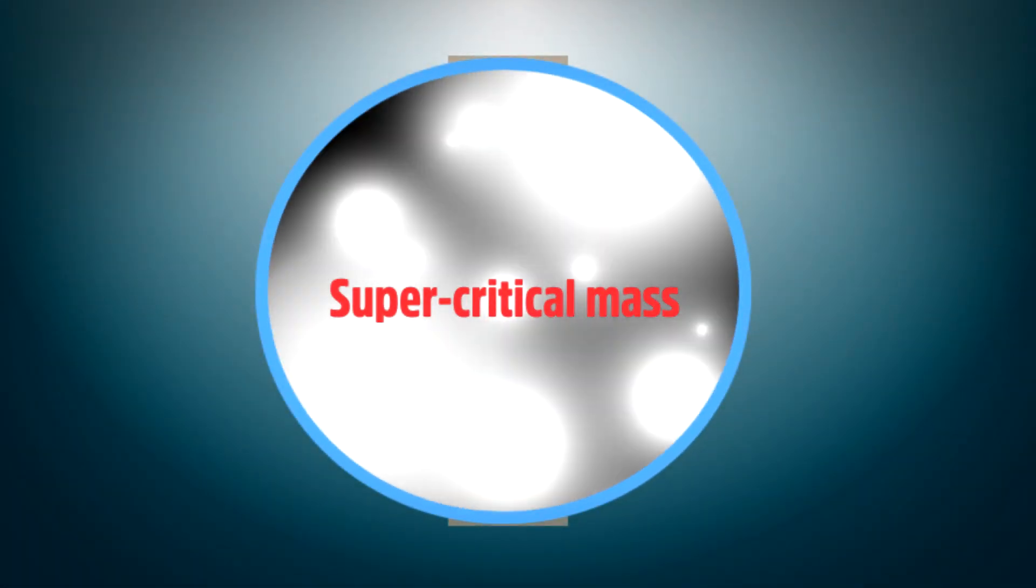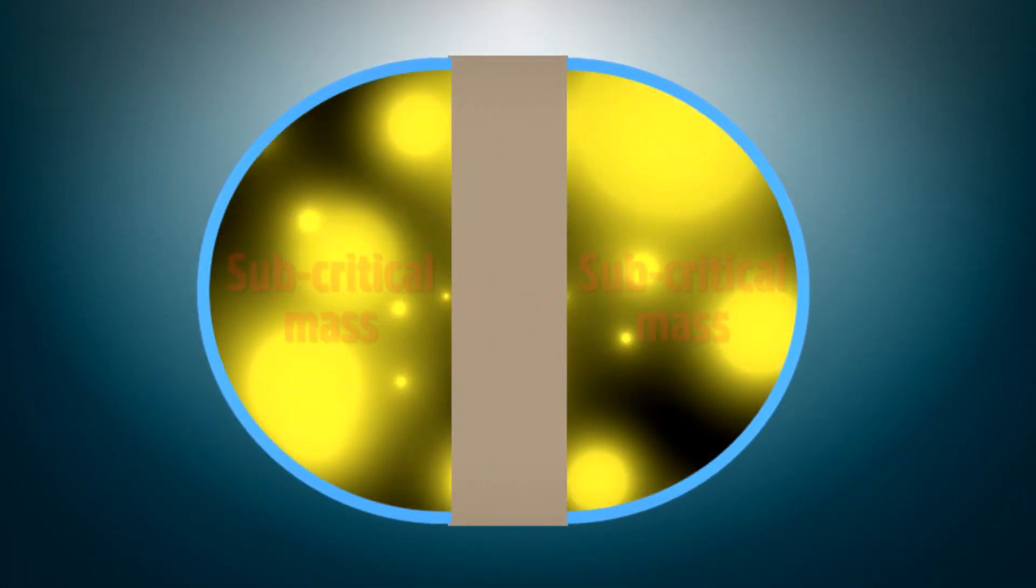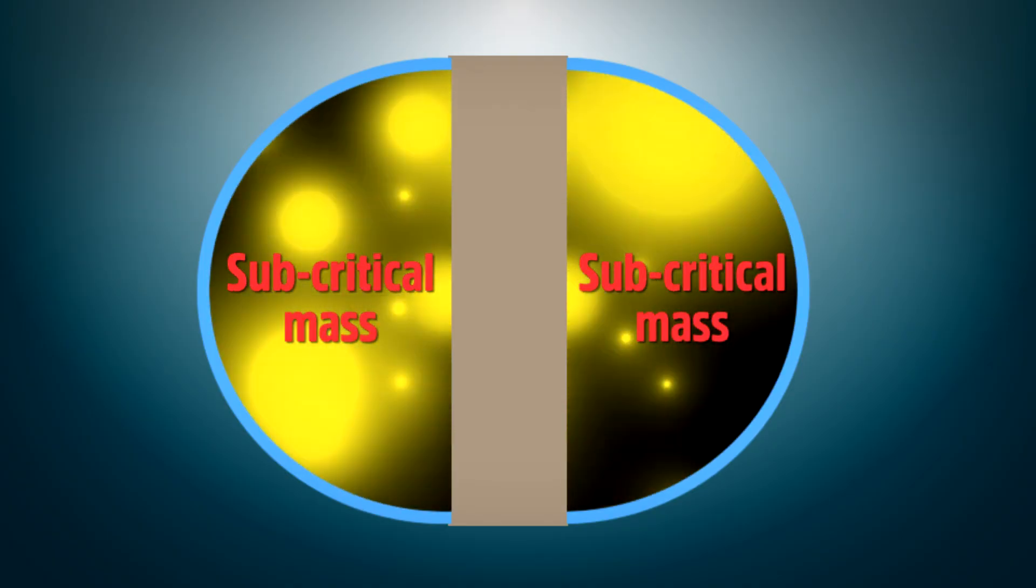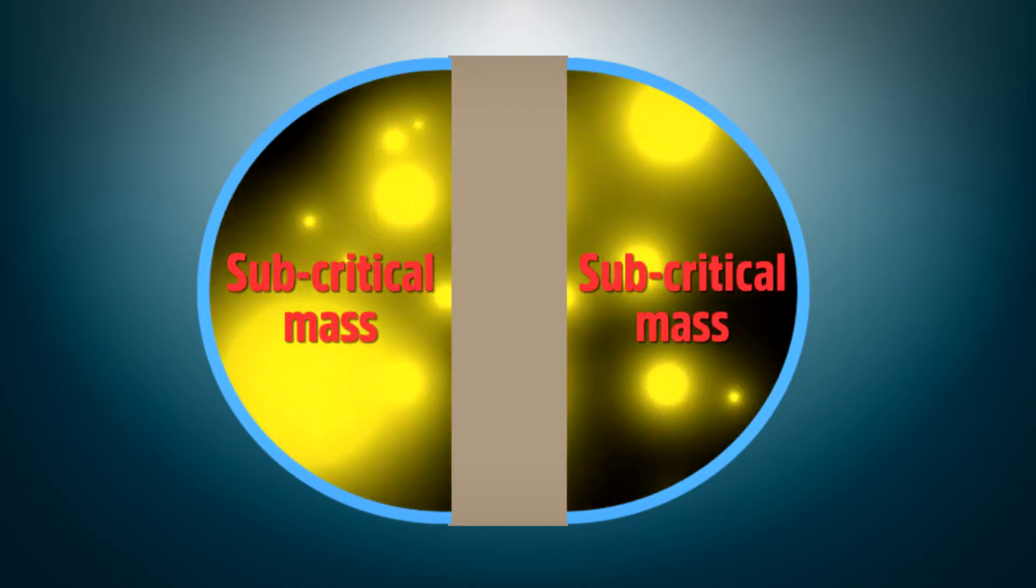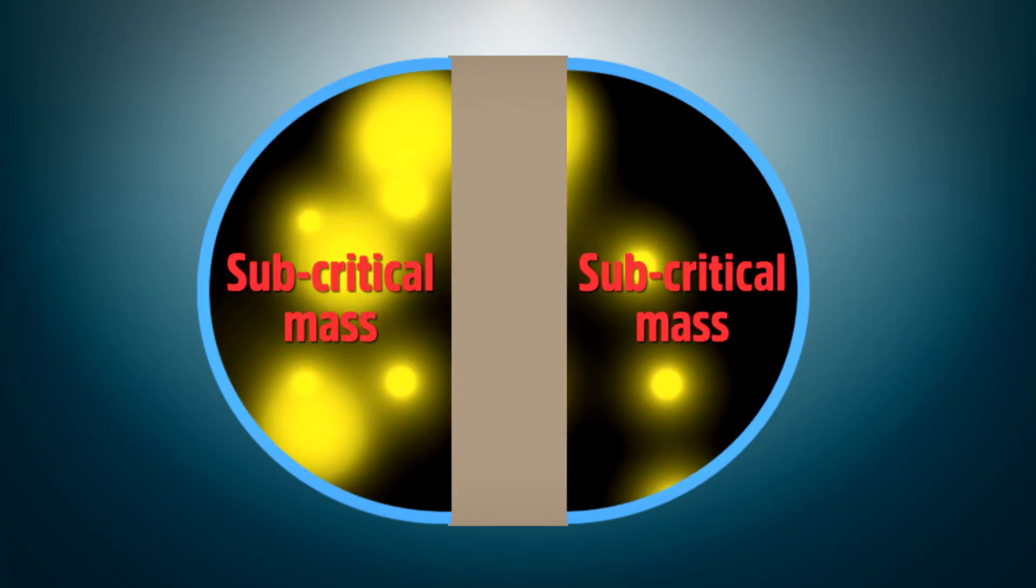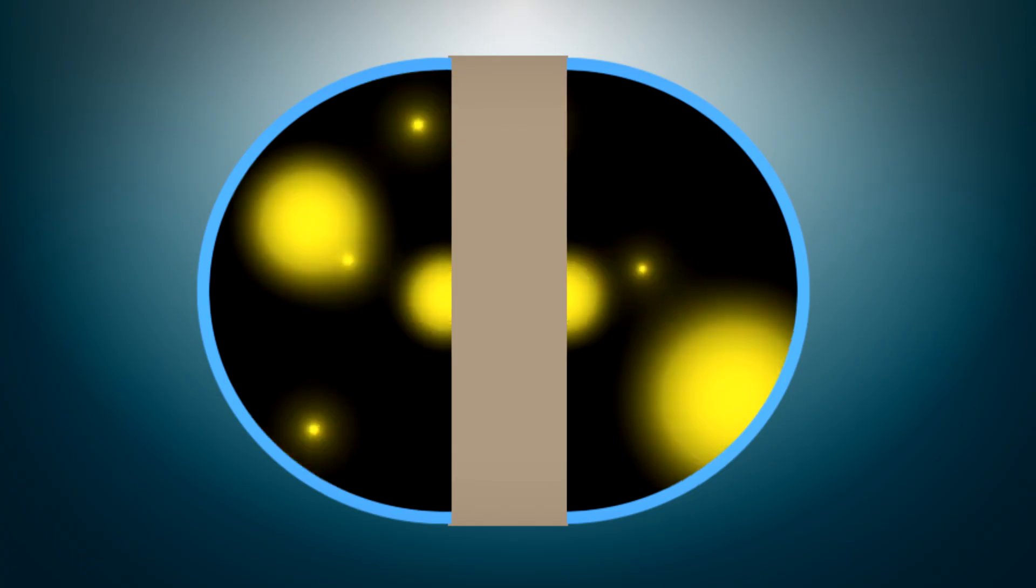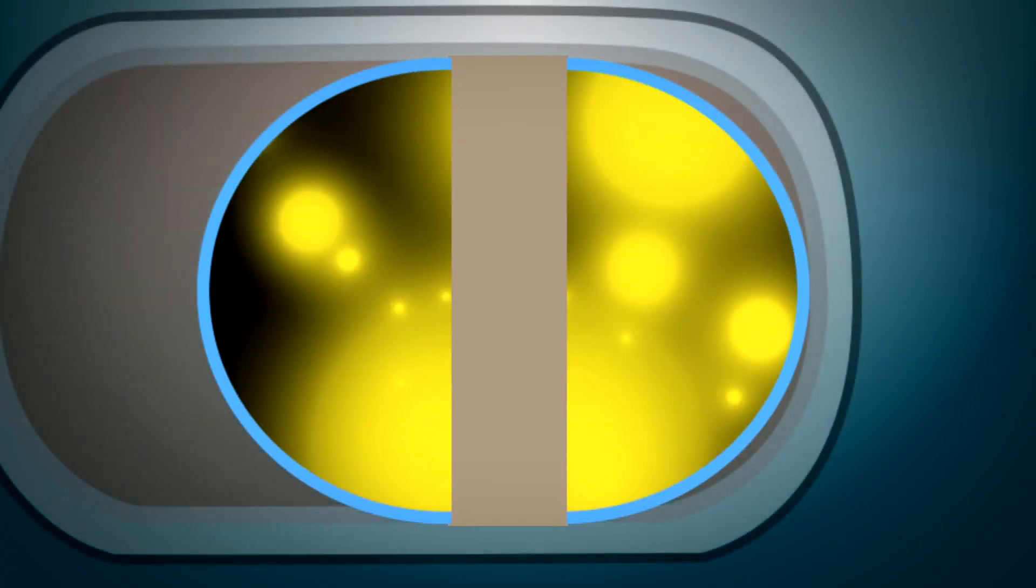And finally, the supercritical mass has to be kept apart until you are ready for an explosion. Otherwise, an explosion can occur when you do not want it. The reason is because these isotopes are unstable and are throwing off neutrons randomly. So the mass has to be kept apart so that it is subcritical until ready to be exploded.